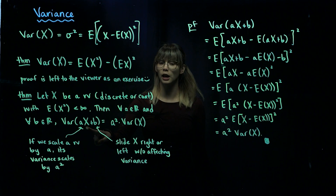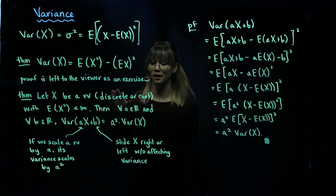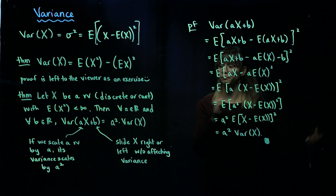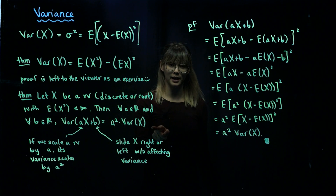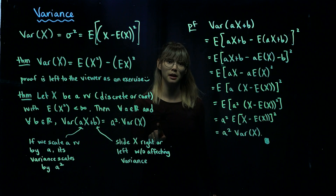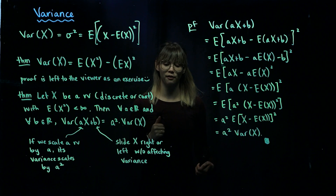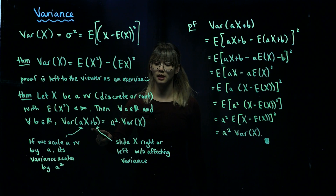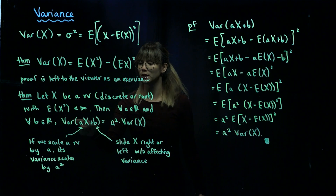Let's build some intuition for what this is saying. We have our random variable X, and we multiply it by a, so we're scaling our random variable by a. Then we shift it b units. So aX plus b rescales X by a and then shifts it by b units. We notice that on the right-hand side of this equation there is nothing about b, and that's because when we move x right or left it does not affect the variance.